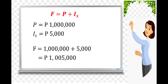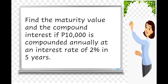For the future value, F is equal to P plus I sub S, wherein the principal is 1 million and the interest is 5,000. Adding these two, we have 1,005,000 pesos.